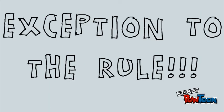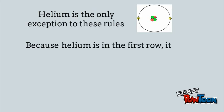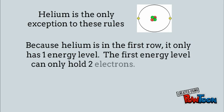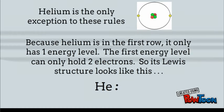Let's take a look at the exception to the rule. Helium is the only exception to these rules. Because helium is in the first row, it only has one energy level. The first energy level can only hold two electrons, so its Lewis structure looks like this: helium symbol with two valence electrons on the same side.